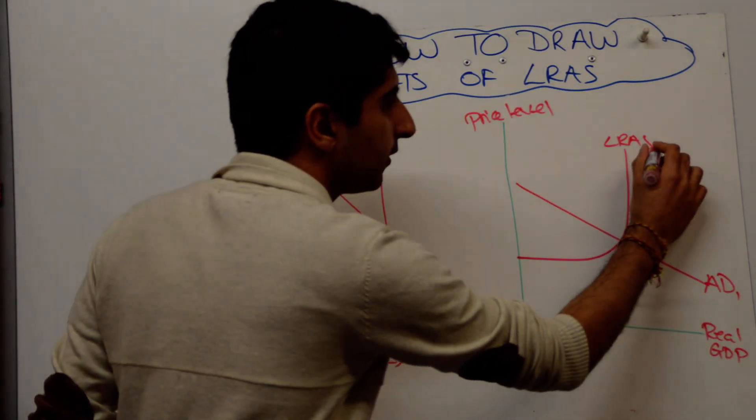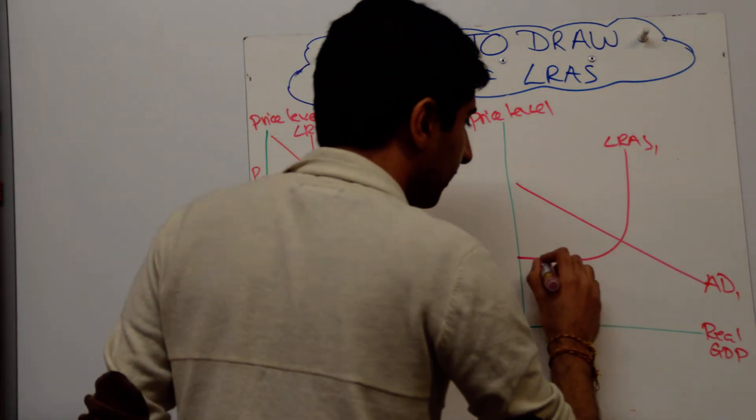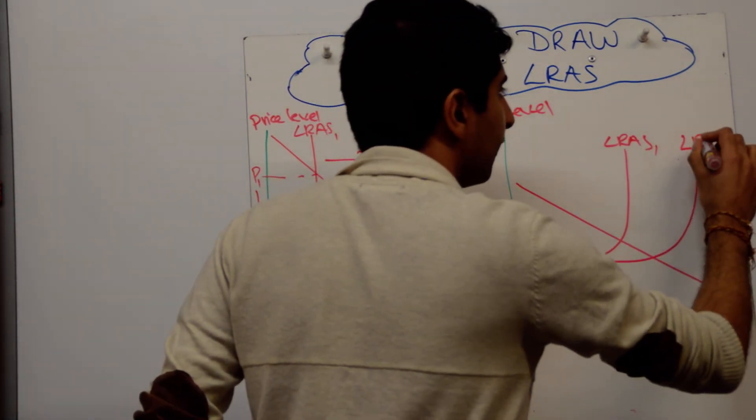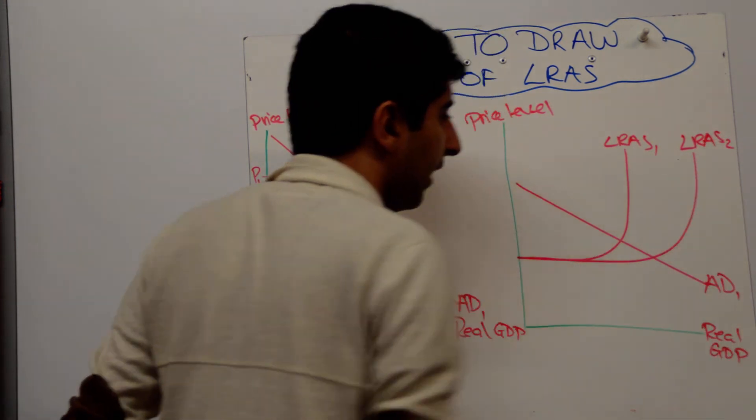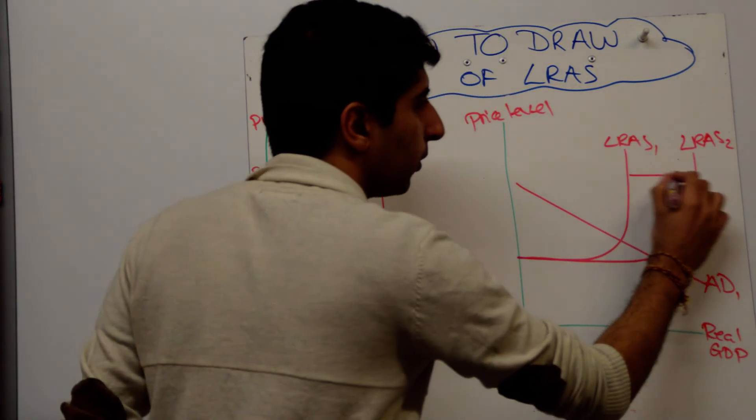So to show the shift of LRAS to the right, just extend the curve. Extend it out like that, from the horizontal path. Extend it outwards, and we have the shift. Put an arrow if you want to.